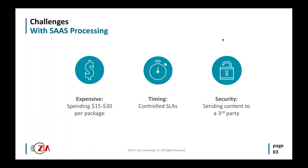The first option is SaaS processing — cloud-based services that can do capture-type processing, storage, processing, retrieval, and stacking and sorting. One of the big difficulties with SaaS processing is that it's expensive.